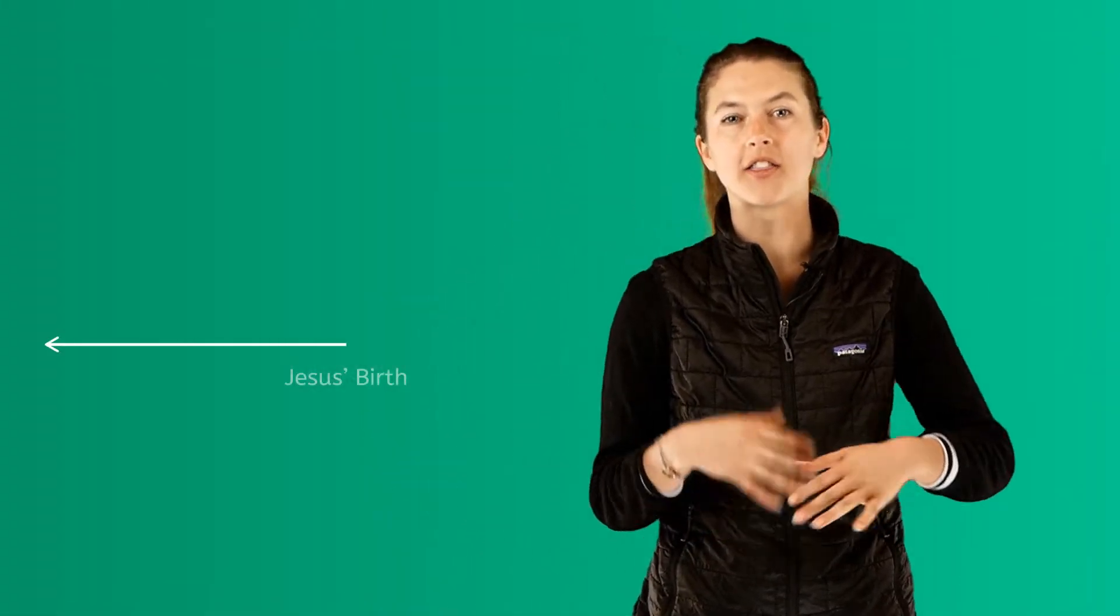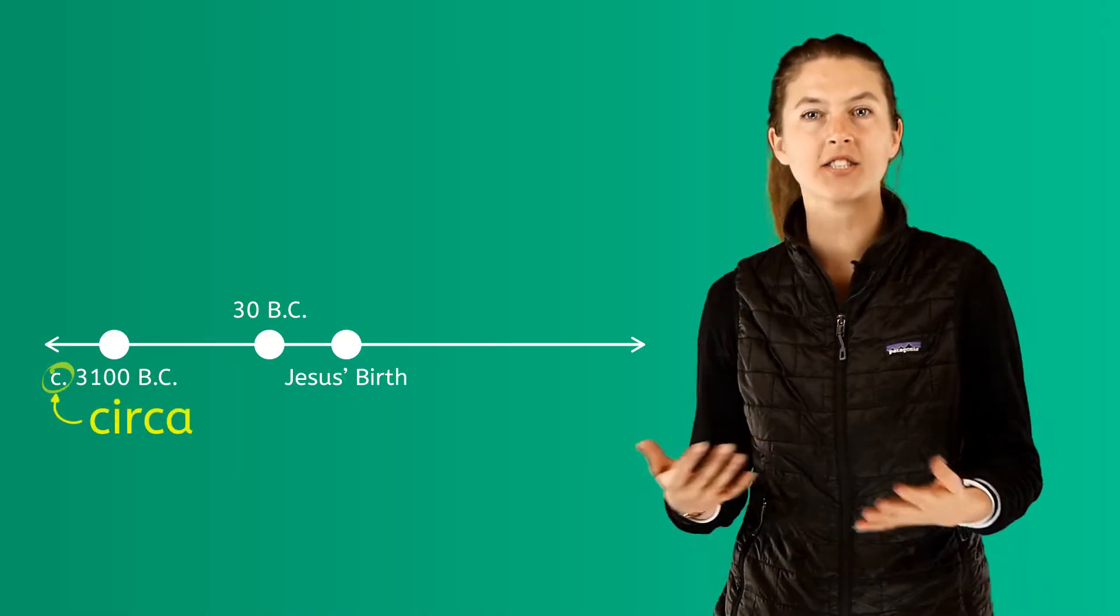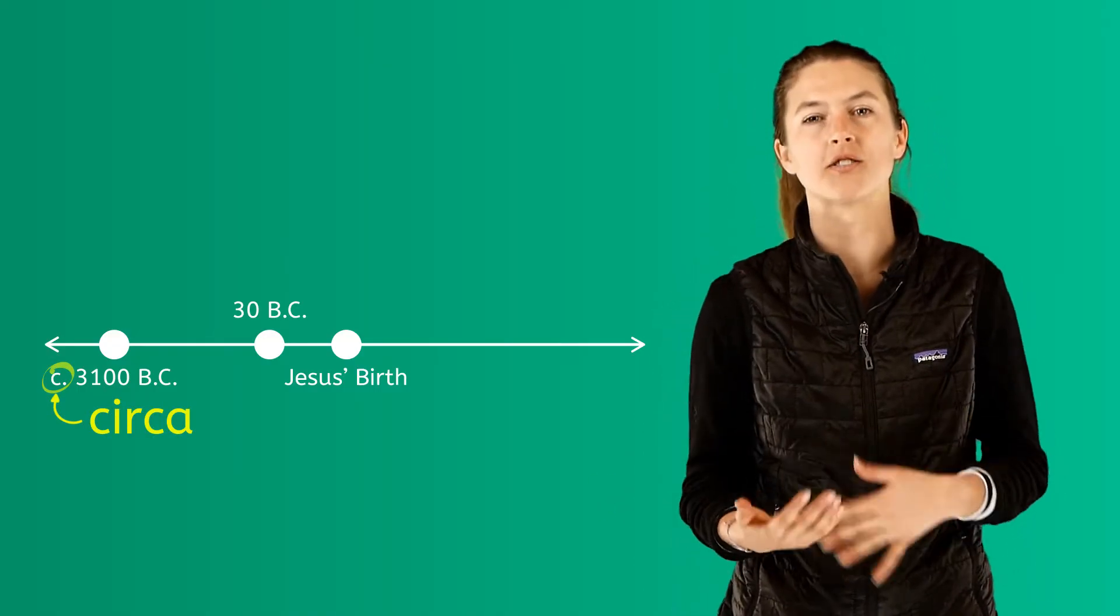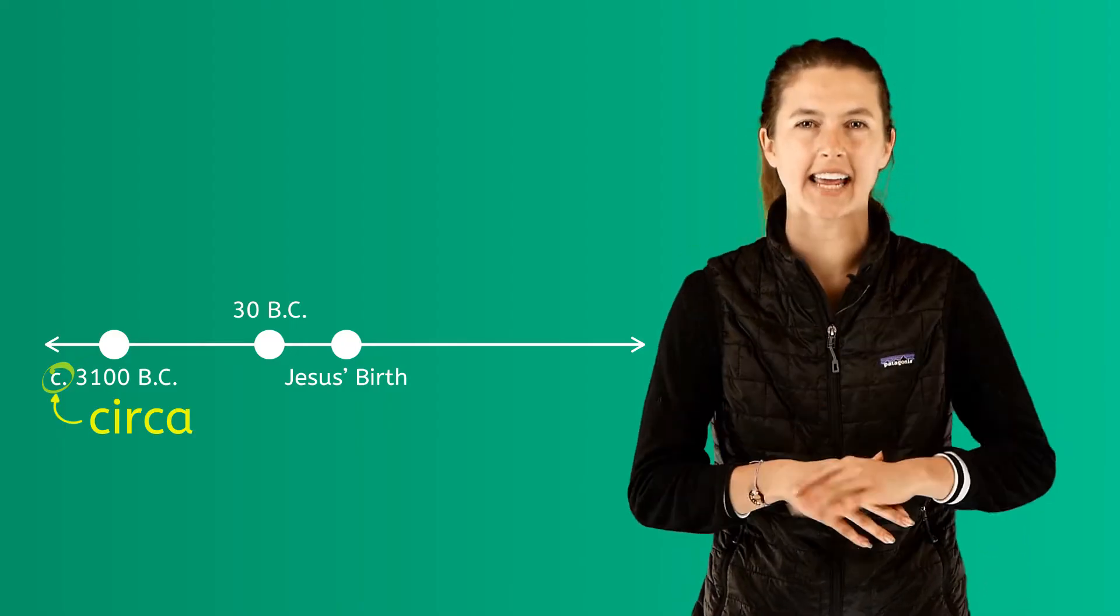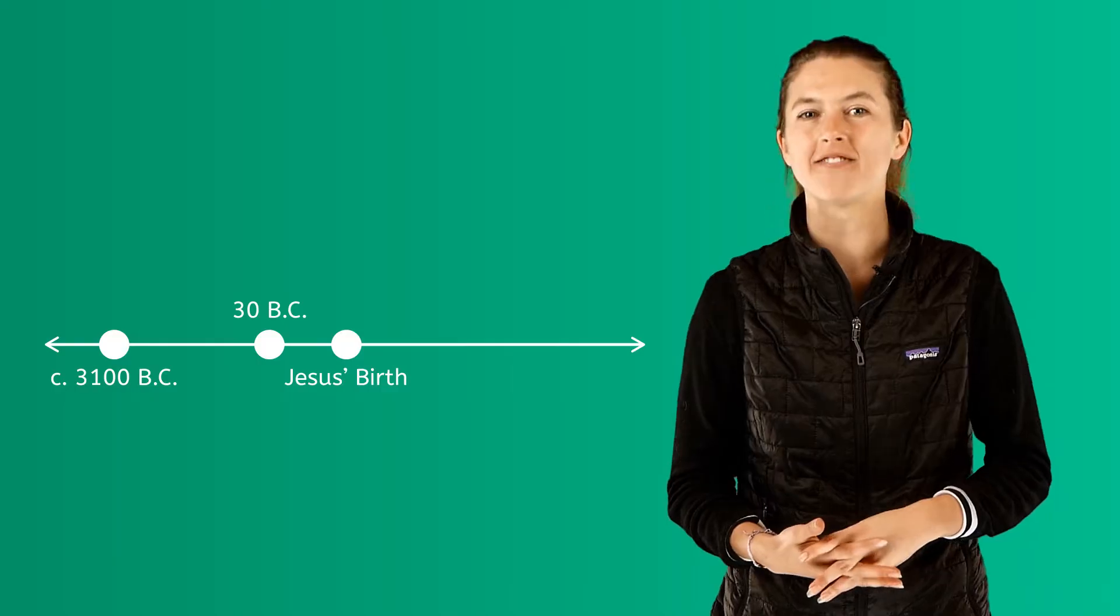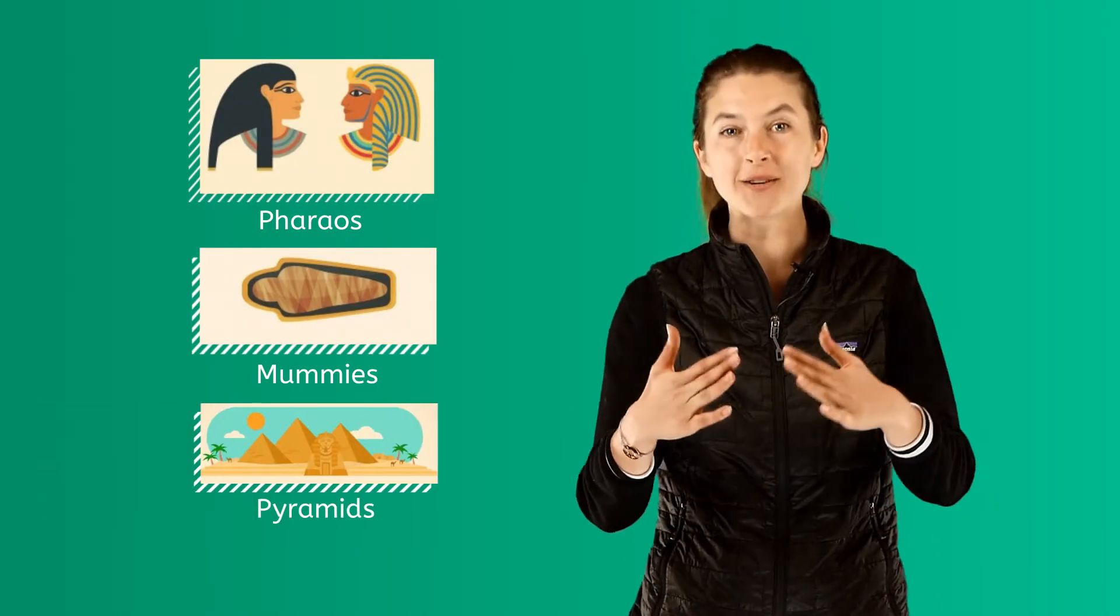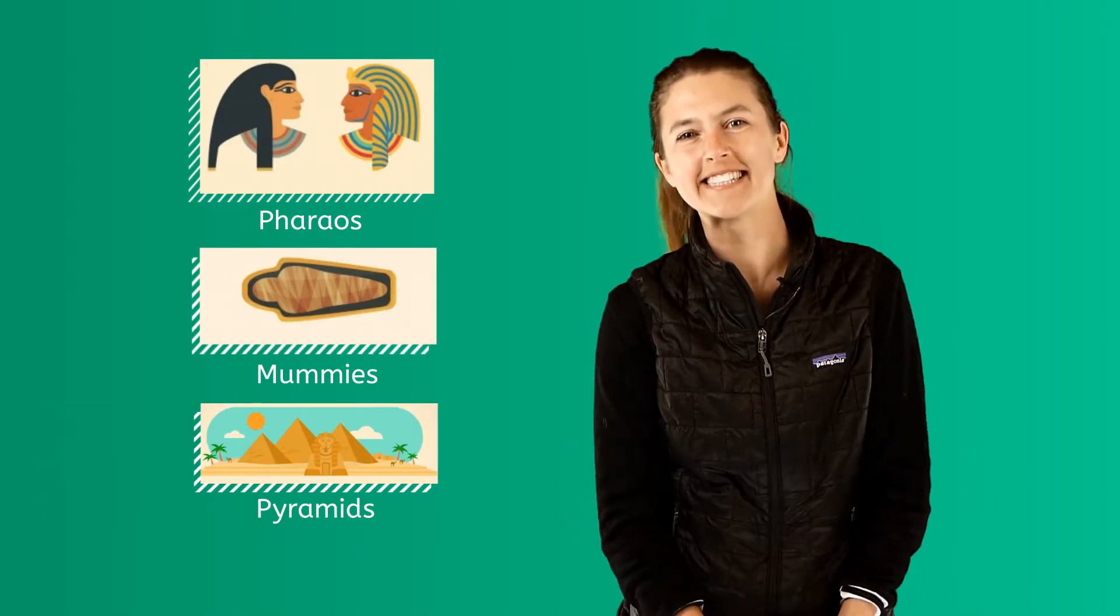The Ancient Egyptian Empire lasted from circa 3100 BC to 30 BC. Remember, circa means about, because historians do not know the exact date. Ancient Egyptian history is filled with interesting facts about Egyptian kings and queens called pharaohs, mummies, and large monuments called pyramids, which can still be seen today.